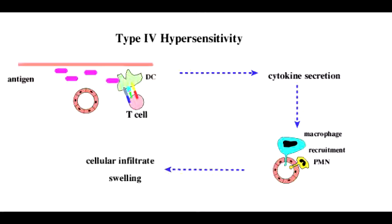What are some examples of type 4 hypersensitivity? Some examples of type 4 hypersensitivity include transplant rejection as well as contact dermatitis.